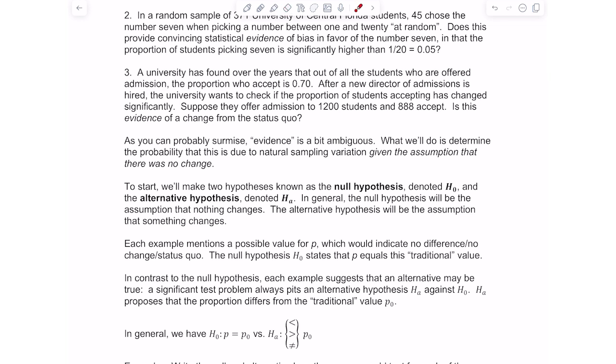The first one's called the null hypothesis, and the way we denote it is an H with a subscript zero, and then the alternative hypothesis, we're going to denote that with an H and a subscript A. Depending on what version of a textbook you might look at, HA can also be denoted as H1. If you see either of those, it's the alternative hypothesis.